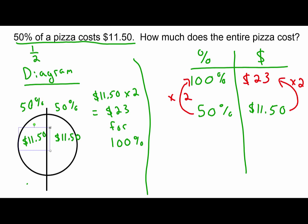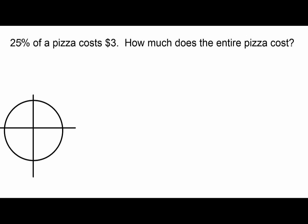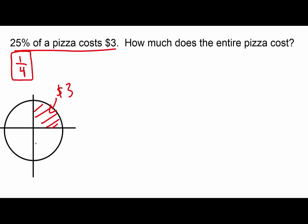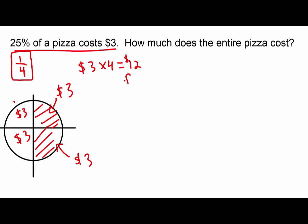Next example: 25% of a pizza costs $3 — how much does the entire pizza cost? Since 25% is one-fourth, I drew a pizza with four sections and shaded one-fourth. That piece is $3, and each of the other three pieces is also $3. So $3 times 4 equals $12 for 100%.